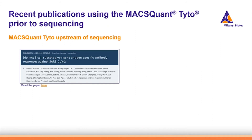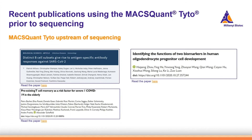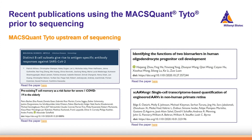I want to show you some recent publications using the MACSQuant Tyto prior to sequencing. One example from COVID-19 research comes from Patrick Wilson and colleagues, working on B-cell subsets. Another COVID-19 example comes from Petra Bacher and colleagues, interested in T-cell memory. A study on biomarker identification used oligodendrocyte progenitor cells, and there is an example from non-human primate research where retinal cells were sorted.